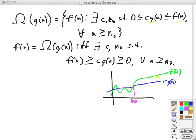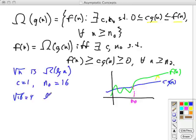To look at an example, let's consider √n is Ω(log n). And you can show this with c = 1 and n0 = 16. So at n0 = 16, the square root of 16 is equal to 4. And, of course, the log base 2 of 16 is equal to 4, so they're equal at that point.